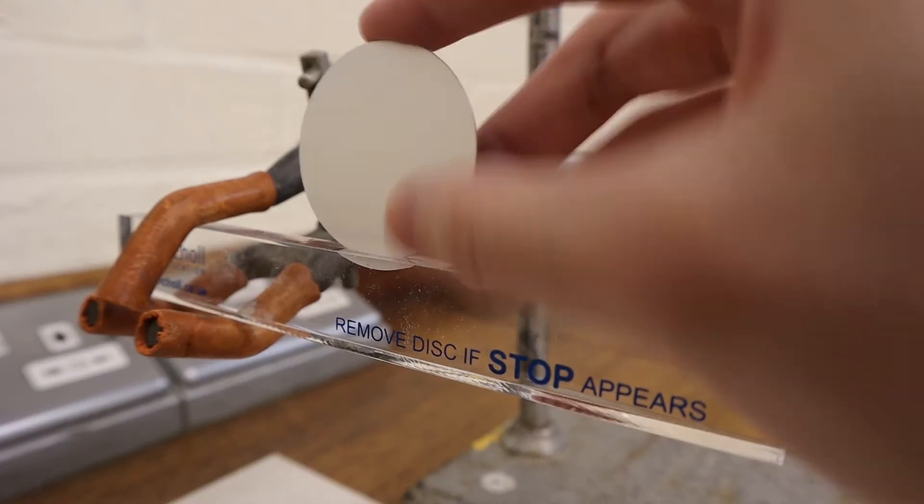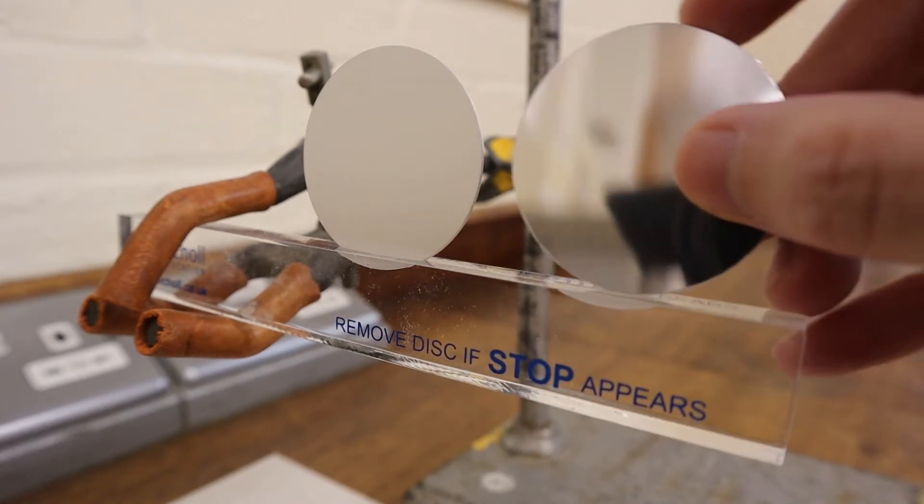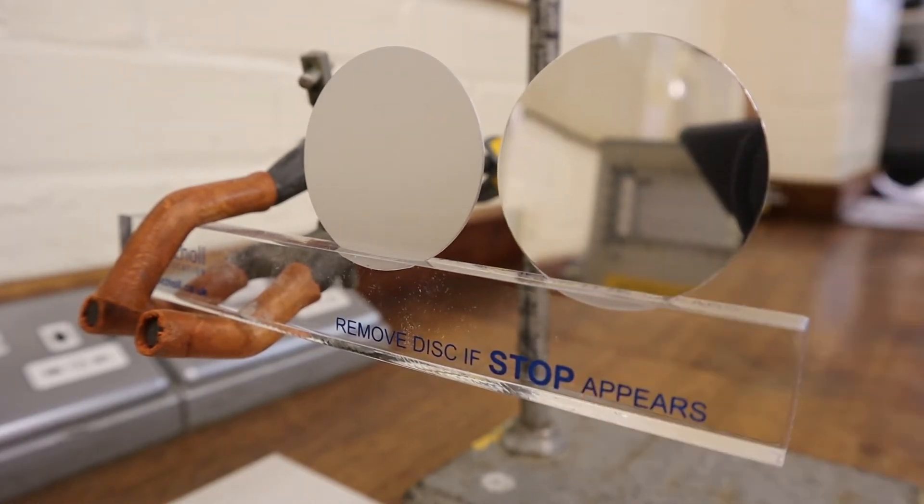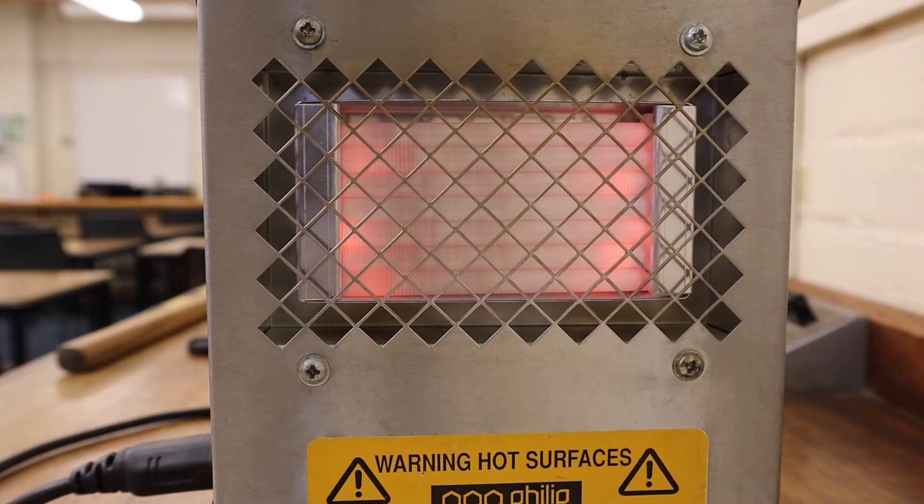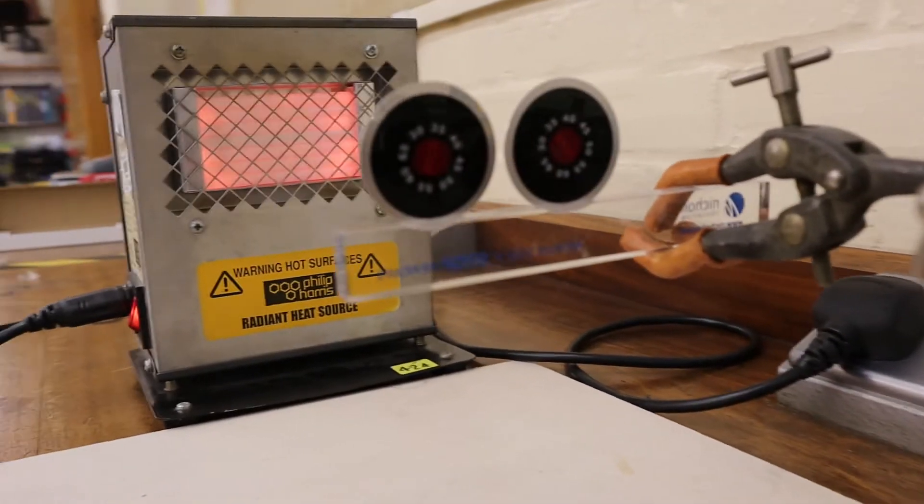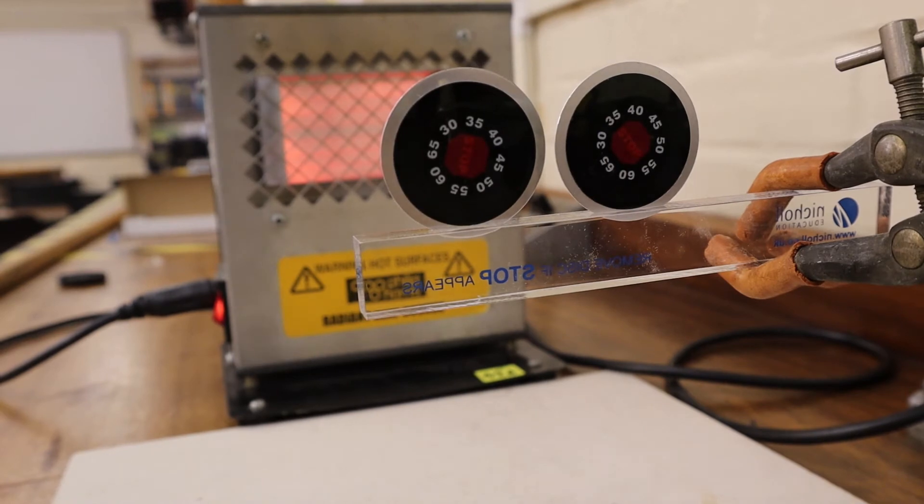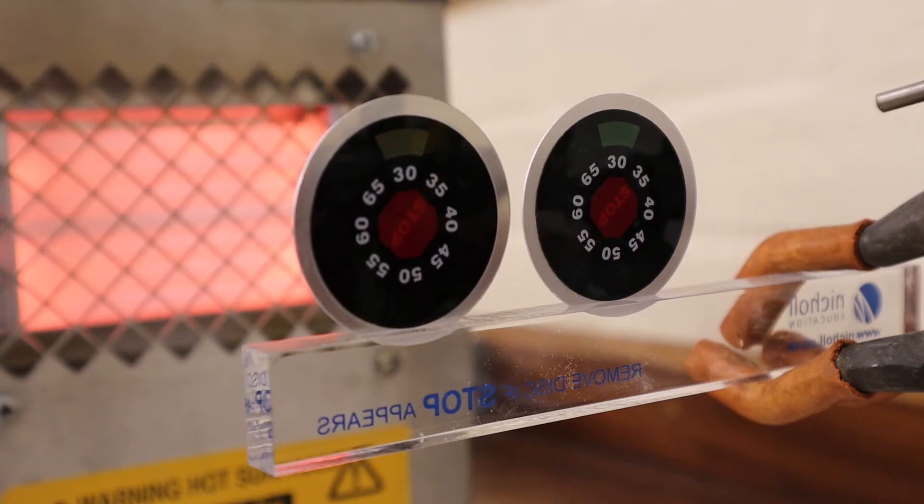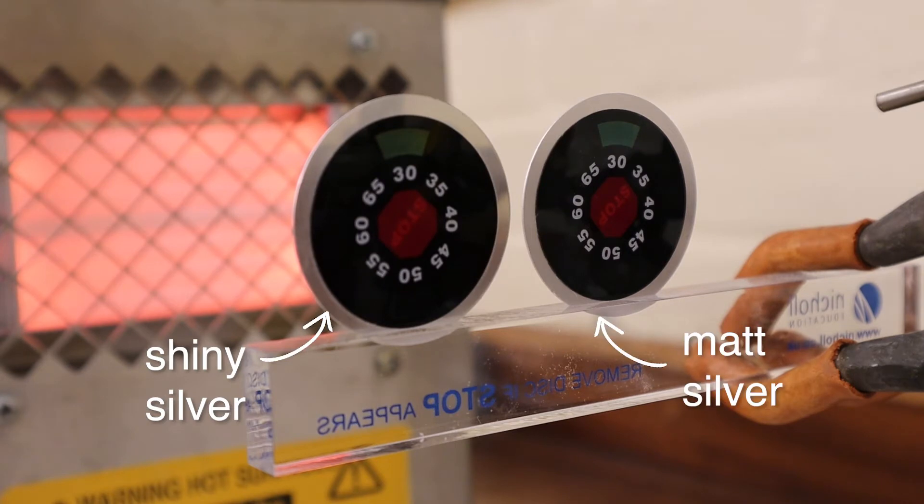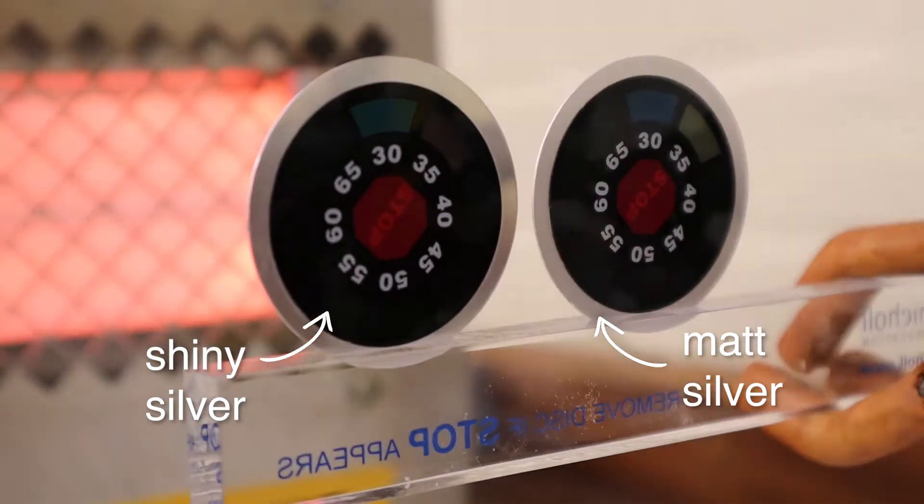Let's compare matte silver against shiny silver first. As each disc absorbs the radiation from the heater, the liquid crystal thermometer on the back will change colors. Take a guess which will absorb more radiation at a higher rate.